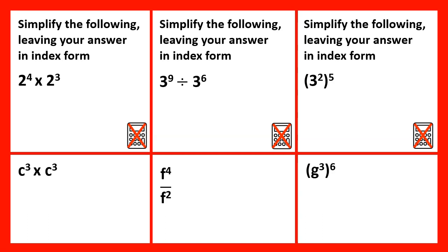The Laws of Indices let you simplify complicated expressions with powers just like these ones. When multiplying terms where the base numbers are the same, we can simplify these by adding the indices together. So the base number will remain the same, and then 4 plus 3 is 7, so 2 to the power of 7.